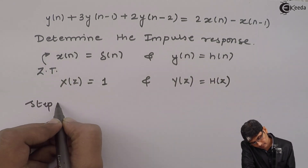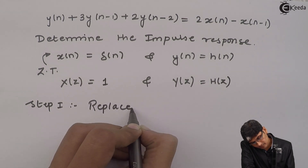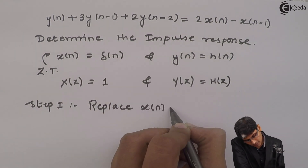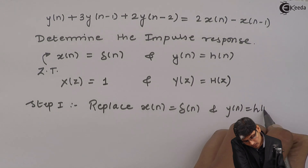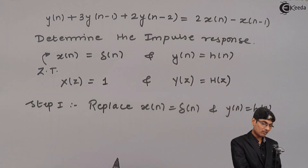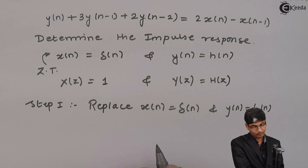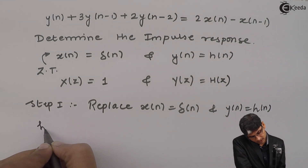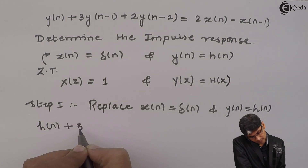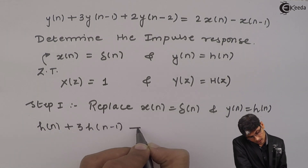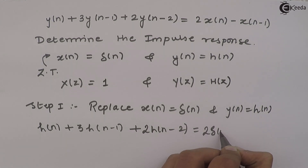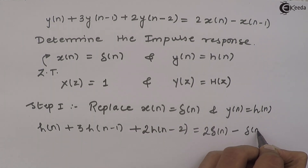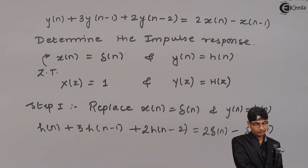Step 1: Replace x(n) by δ(n) and y(n) by h(n). Whenever I get a problem to determine the impulse response, by default I replace x(n) with δ(n) and y(n) with h(n). Then my equation becomes: h(n) + 3h(n-1) + 2h(n-2) = 2δ(n) - δ(n-1).